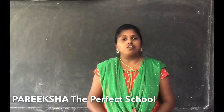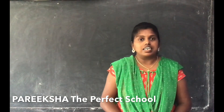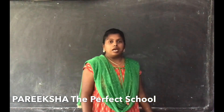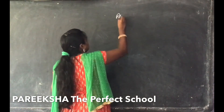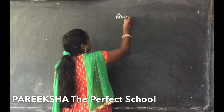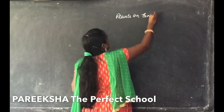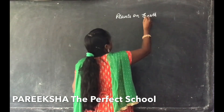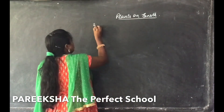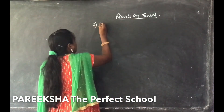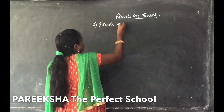The examples of plants on hills and mountains are pine, fir, cedars, spruces, etc. Today we are going to learn about plants in plains. Our lesson name is plants on earth, and today we are going to learn about the second category: plants in plains.